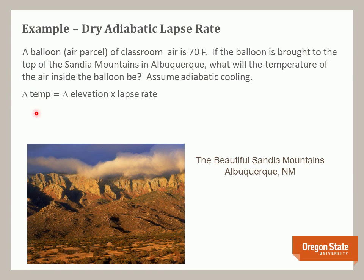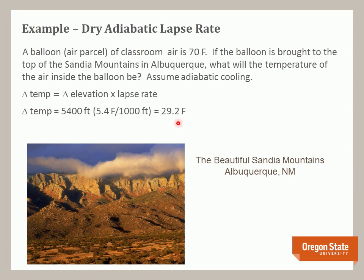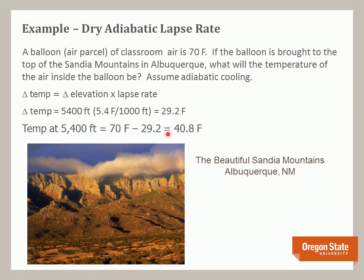Remember, the change in temperature is equal to the change in elevation times the lapse rate, which in this case is the dry adiabatic lapse rate. 5,400 feet times the dry adiabatic lapse rate — a fixed model value — gives us a change in temperature of 29.2 degrees Fahrenheit. We subtract that from the surface temperature and get the temperature of the air inside the parcel: 40.8 degrees Fahrenheit. Note this temperature is only the temperature inside the parcel — it's not the air temperature at the top of the Sandias. That's a very important concept.